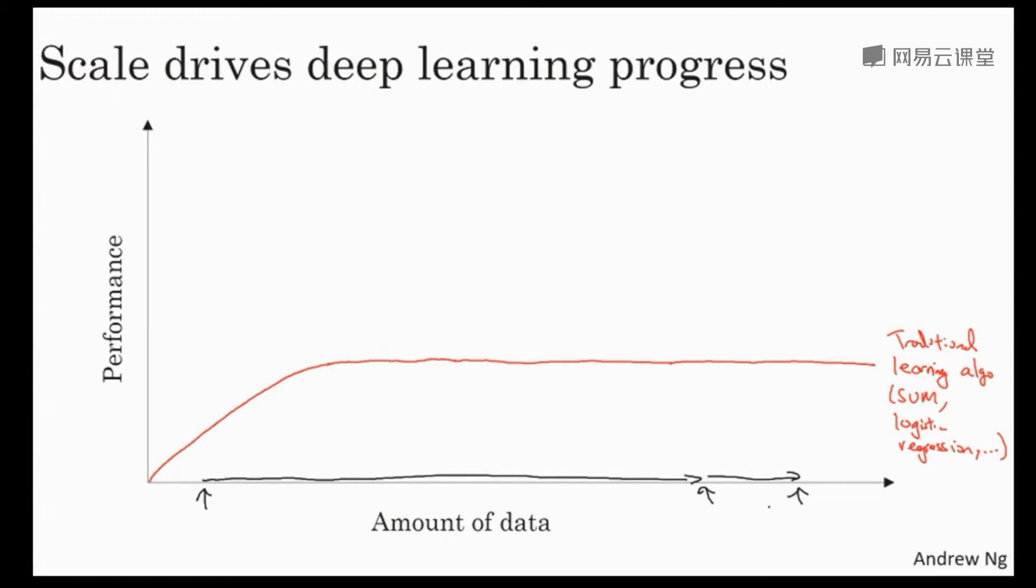So over the last 20 years for a lot of applications, we just accumulated a lot more data, more than traditional learning algorithms were able to effectively take advantage of. And with neural networks, it turns out that if you train a small neural net, then its performance maybe looks like that. But if you train a somewhat larger neural net, a medium-sized neural net, its performance is often even a little bit better. And if you train a very large neural net, then its performance often just keeps getting better and better.